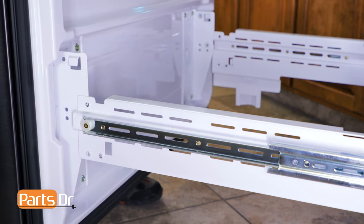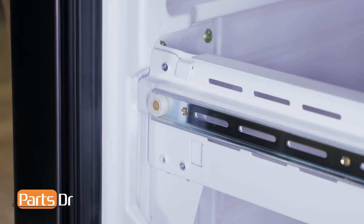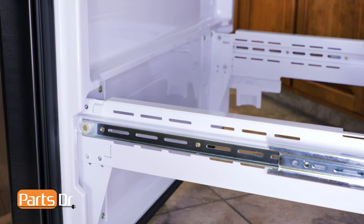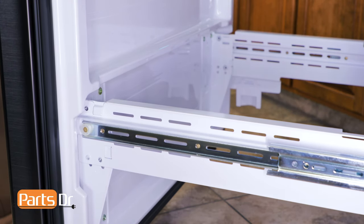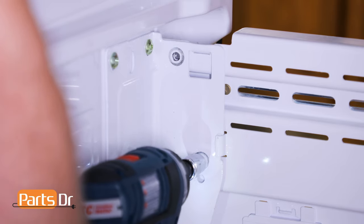Next, reinstall the freezer door by aligning the tabs on the door brackets with the slots on the freezer glides and setting in place. Now reinstall the four 10 millimeter bolts.